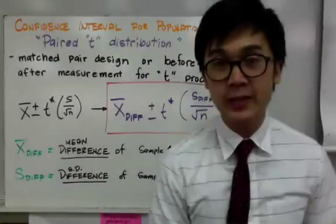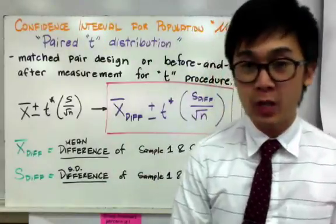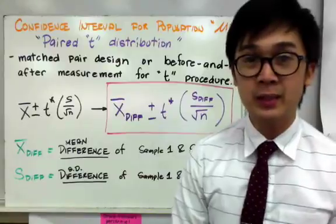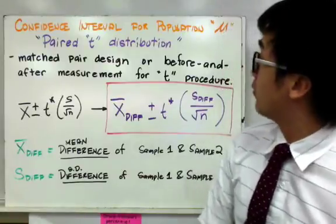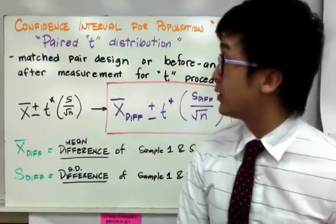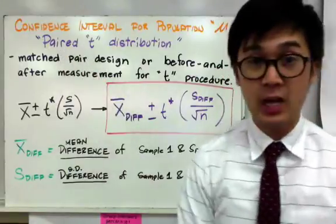Now in confidence interval, in estimating the population parameter, we learned how to use the Z distribution and the T distribution. Now in our confidence interval for population mean, we're going to use the paired T design.